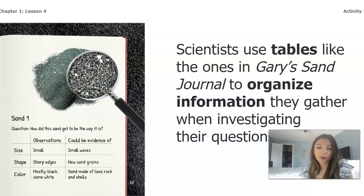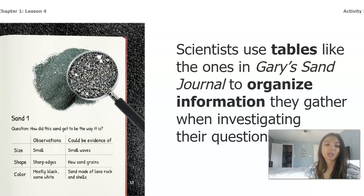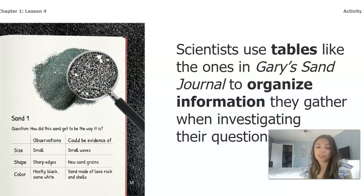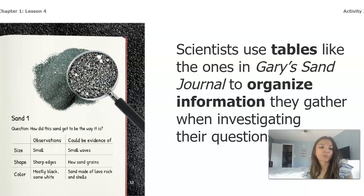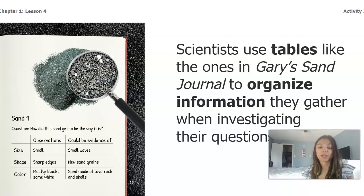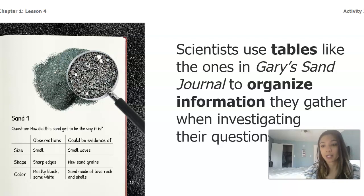After that, he's using what he observed to think about what all of these things could mean. Because the size of those grains were small, it was evidence that the waves were probably small on that beach. Because he noticed that the sand had sharp edges, he knew that the sand was probably new because it was not rounded. And then by looking at the color, he was able to tell that the sand was probably made of lava rocks and some shells, because it's mostly black but there is some white in it.